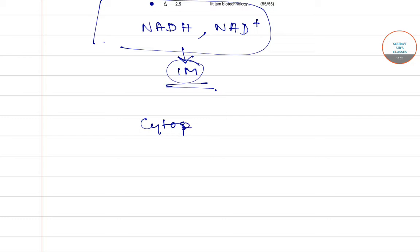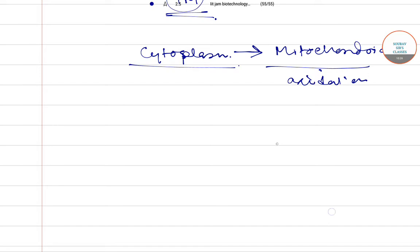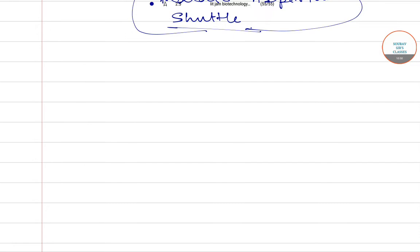Therefore, NADH is generated in the cytoplasm — the cytosol — through glycolysis, and it needs to be passed into the mitochondria for oxidation by the respiratory chain. This transport is accomplished by the malate-aspartate shuttle system.